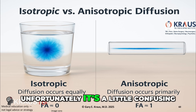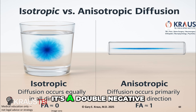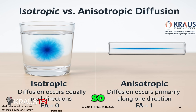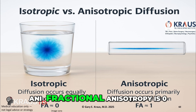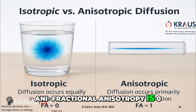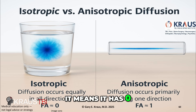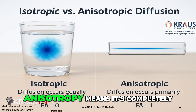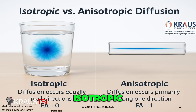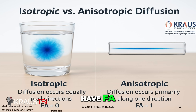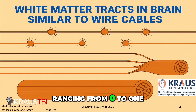It's a little confusing — it's a double negative. Anisotropic: if the FA, fractional anisotropy, is zero, it means it has zero anisotropy, meaning it's completely isotropic. So FA ranges from zero to one.